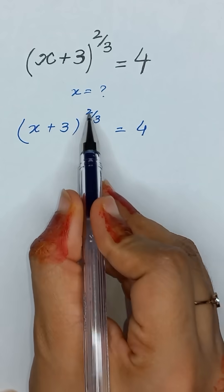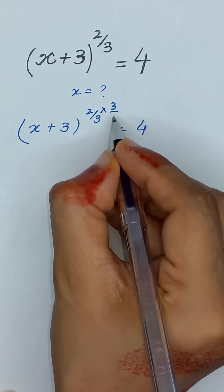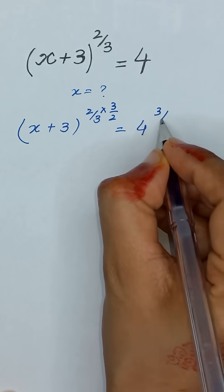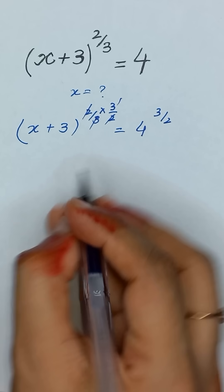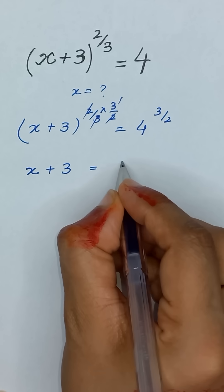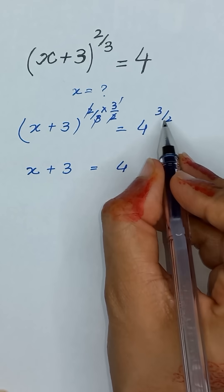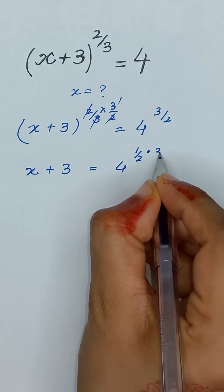First of all, we will remove this power 2 divided by 3 by multiplying power 3 divided by 2 on both sides. So this 2 and 2, 3 and 3 will be cancelled out. And it will become x plus 3 is equal to 4 to the power 3 divided by 2 which can be written as 1 divided by 2 times 3.